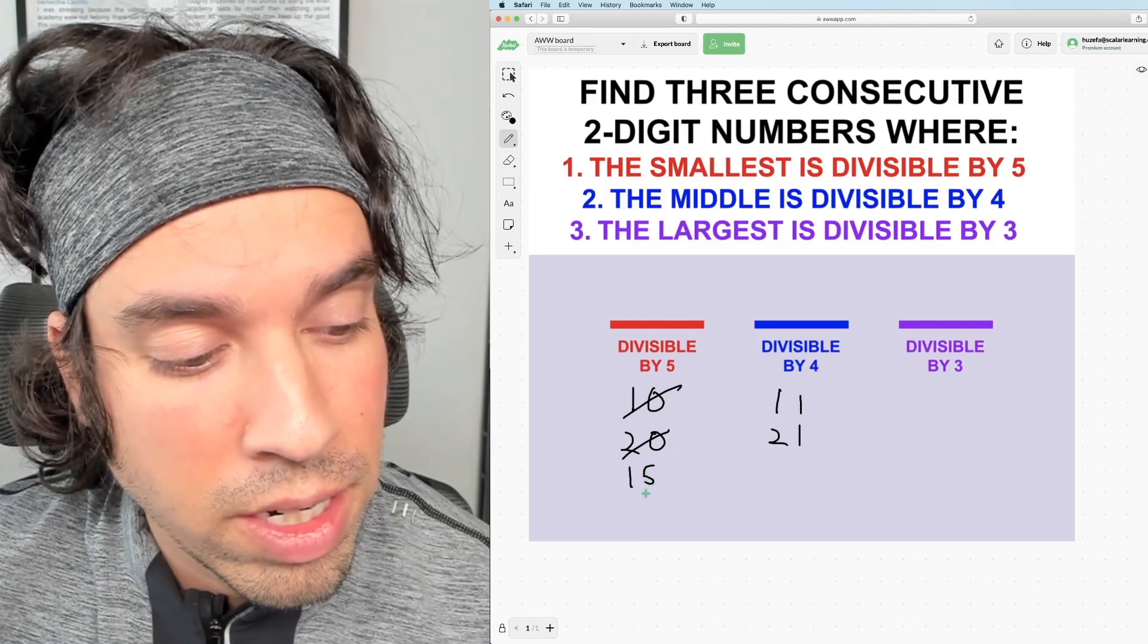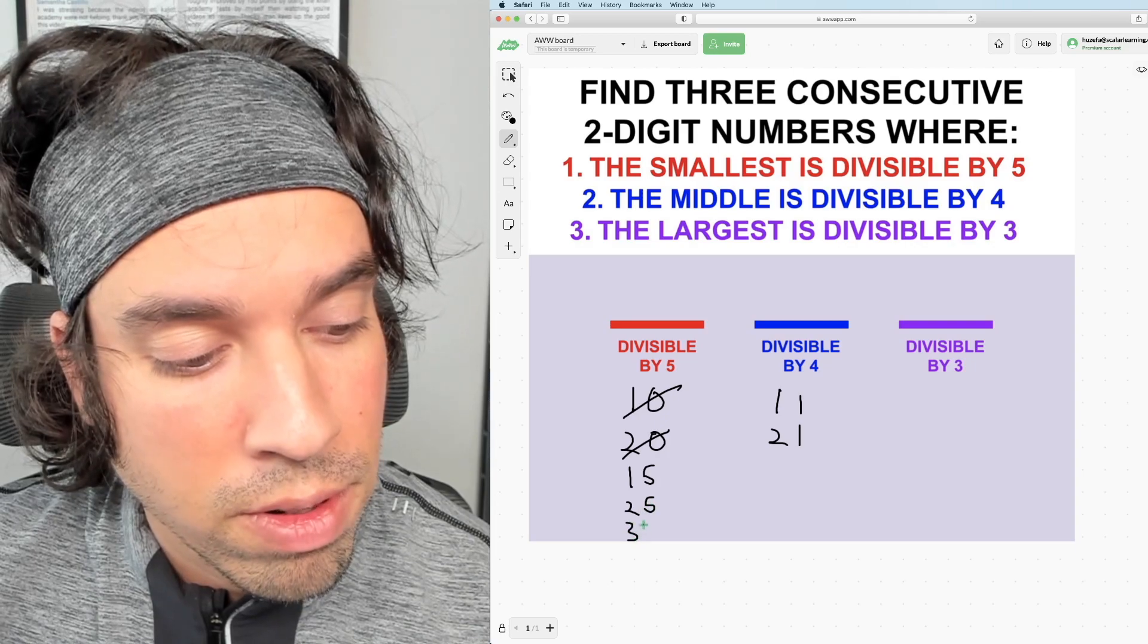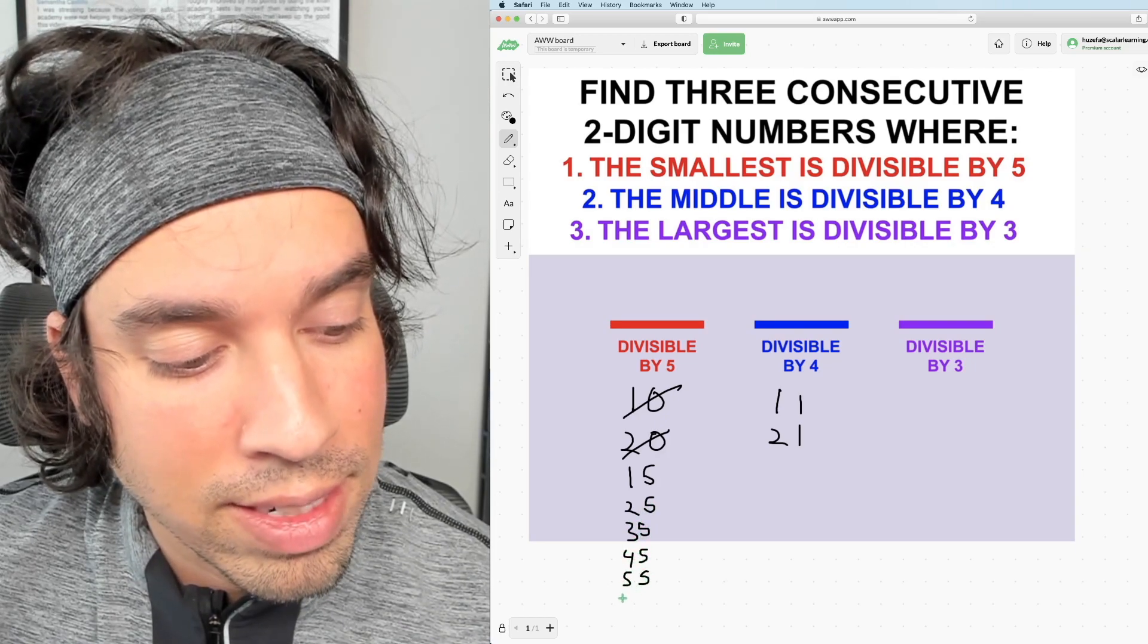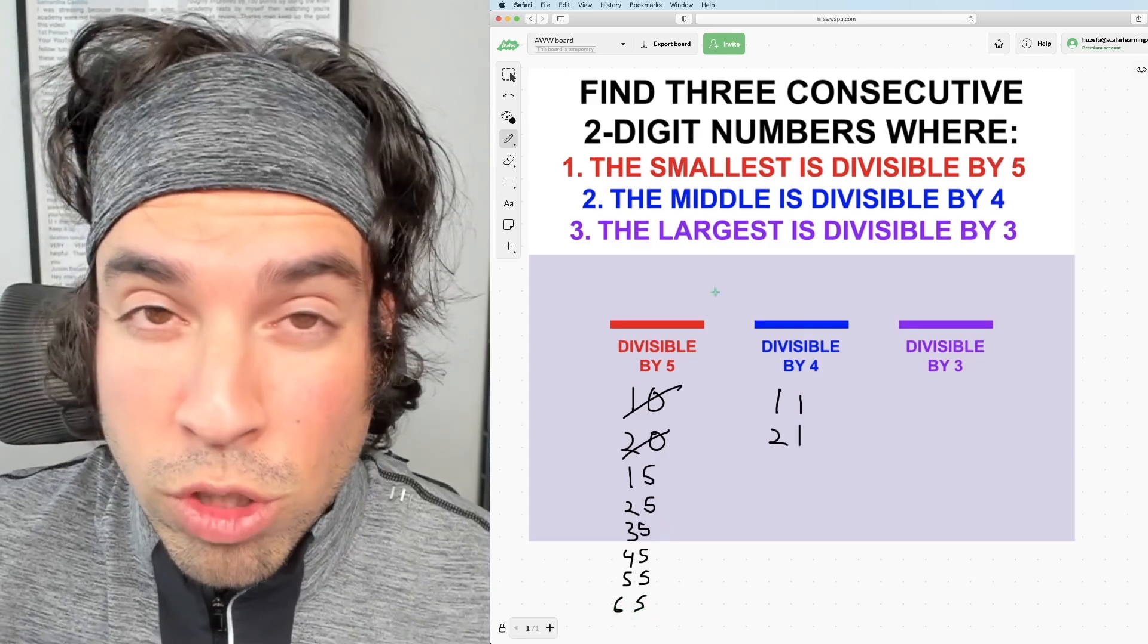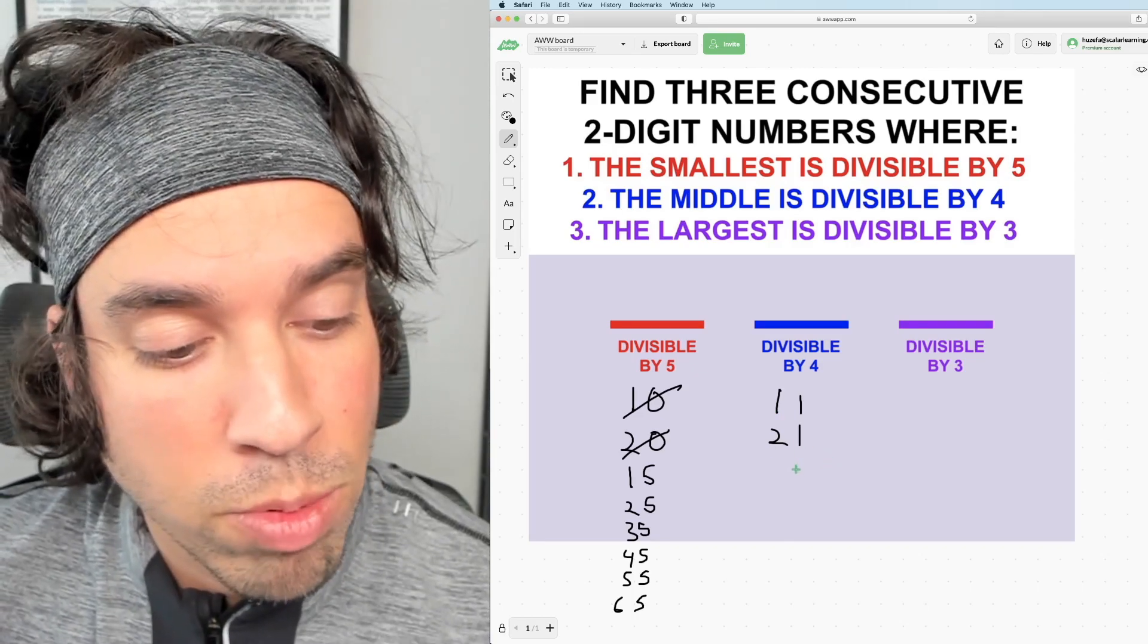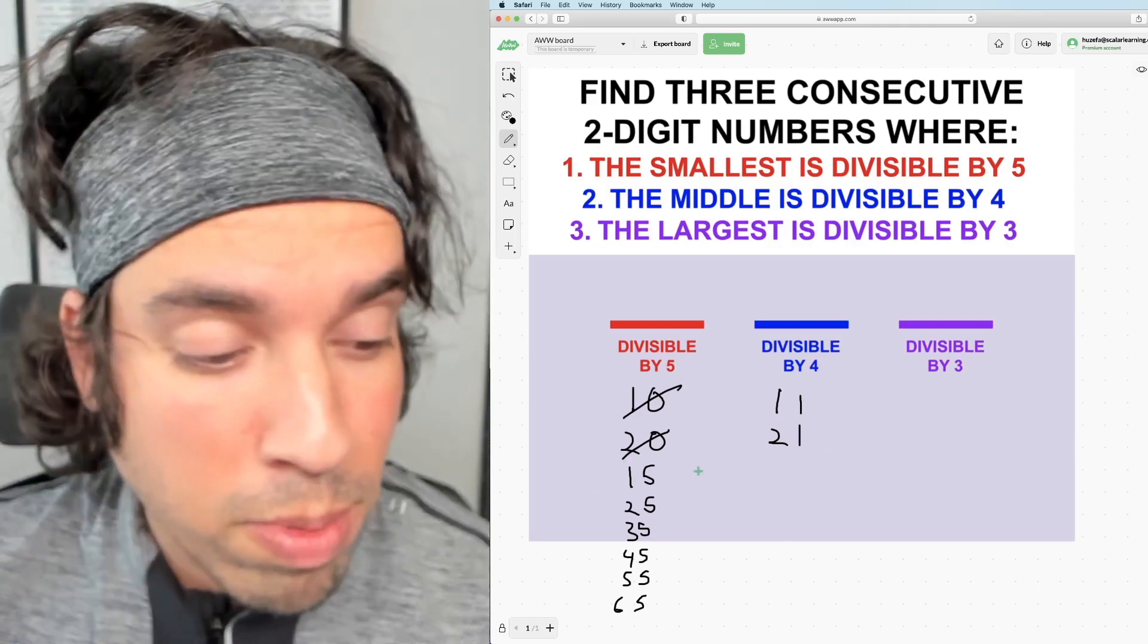You've got 15, 25, 35, 45, 55, and 65 and so on and so forth. So we'll just put a couple of these down and then we'll make our way through. And the number next must be divisible by four and the next one must be divisible by three.